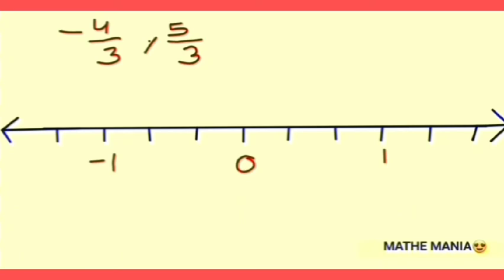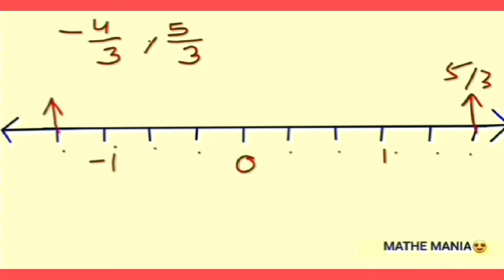To find 5/3, we start counting after 0 toward the positive side: 1, 2, 3, 4, 5 — this is the position of 5/3. To find -4/3, we go in the negative direction from the origin and count 4: 1, 2, 3, 4 — this is the position of -4/3.